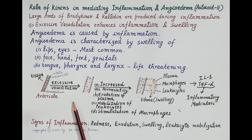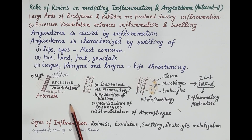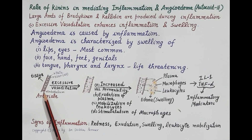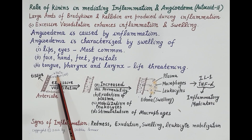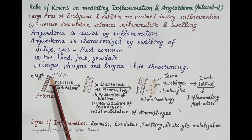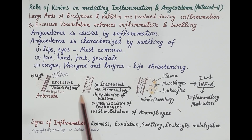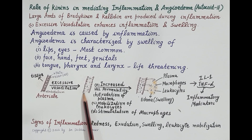Let's discuss why kinins are strong inflammatory mediators and how they produce angioedema. Look at this figure — this is an arteriole, and the innermost lining is made up of endothelium. Kinins stimulate the production of prostacyclin (PGI2) and endothelium-derived relaxing factor (nitric oxide) from the endothelium. Both these factors cause excessive vasodilation.